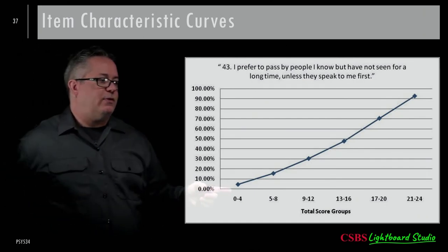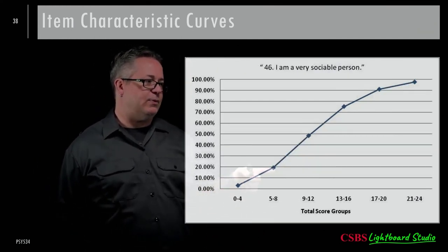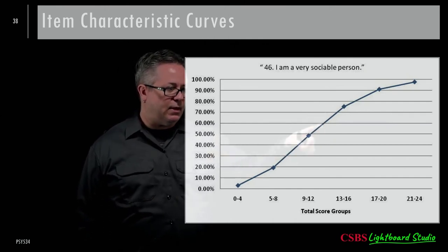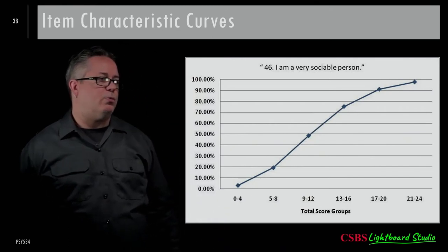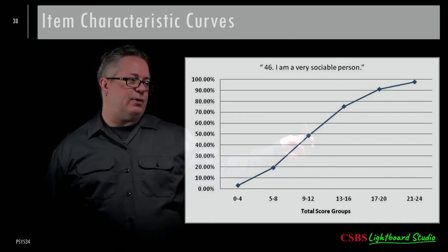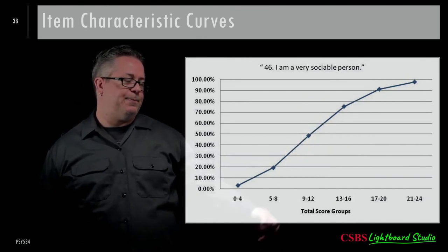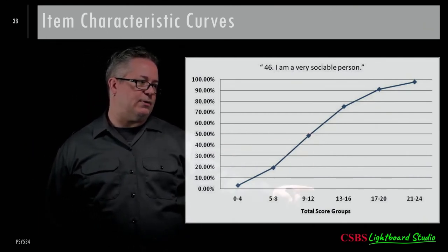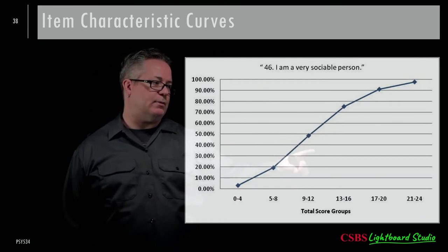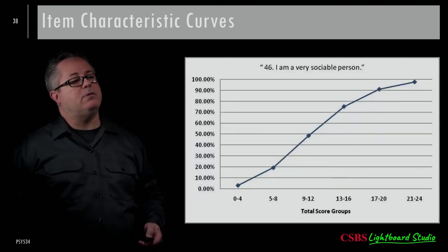Comparing two items: one shows a gradual, nearly linear increase — not very steep, so not very discriminating, with difficulty around the middle. A more discriminating item starts slow, then has a steep slope right around the 50% mark (like a logistic regression curve), then levels off again. That steeper middle portion indicates it can better separate people around the median level of the trait, and its difficulty is slightly below center — a fairly easy but more discriminating item.